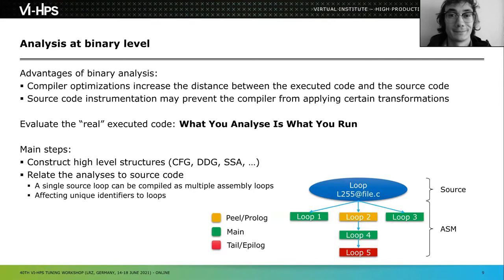The main steps when MAQAO analyzes a binary file: first, we build high-level data structures like a control flow graph, data dependency graph, SSA, and so on. These structures are later used by high-level scripts — what we call modules — to perform the analyses we want. For example, CQA uses the data dependency graph to figure out the different interactions between instructions and how they fit together within a loop body or basic block of the control flow graph.